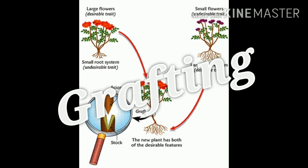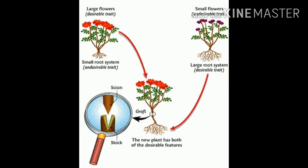Another artificial method of vegetative propagation is known as grafting. In grafting, stems incised from two different plants are attached to grow as a single plant. In this picture, you are observing two plants. Plant one has large flowers, which is a desirable trait, but it has a small root system, which is an undesirable trait. The second plant has a large root system, which is a desirable character, but it has small flowers, which is an undesirable trait.